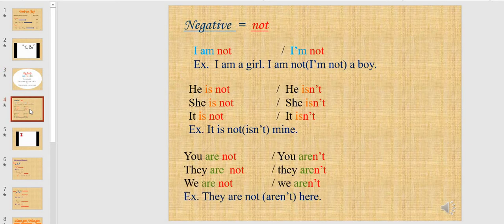Now let's move to another point, which is the negative form of verb to be. If I want to make a negative sentence using verb to be, I use not.